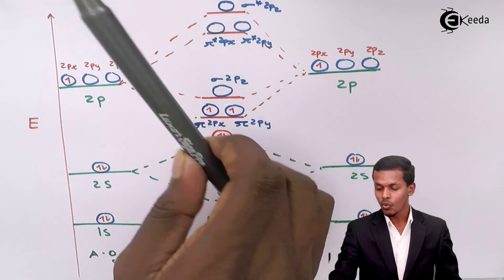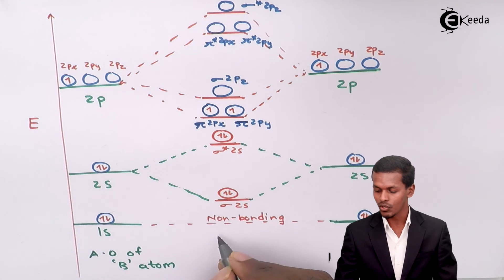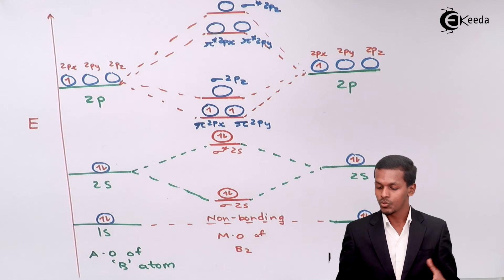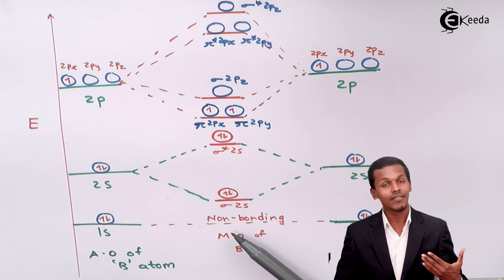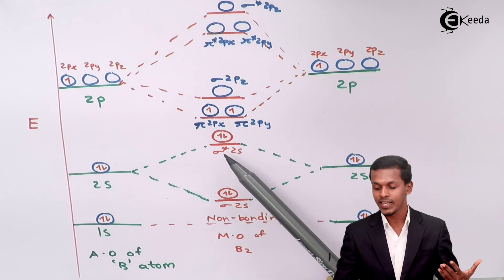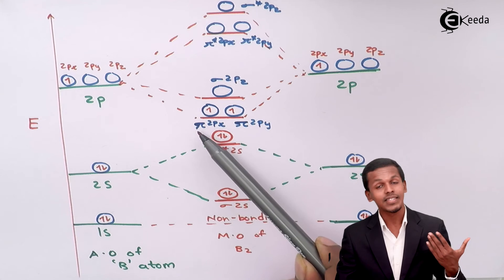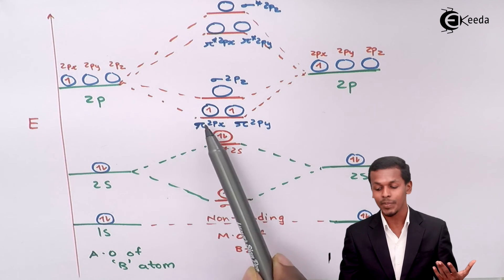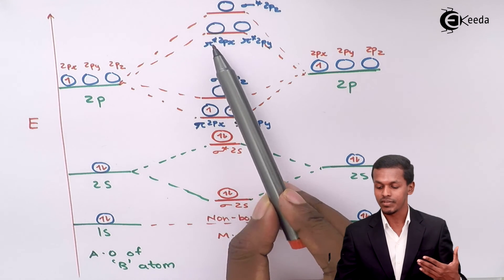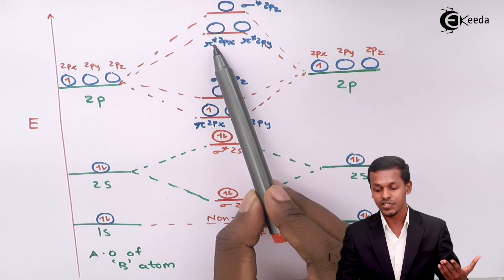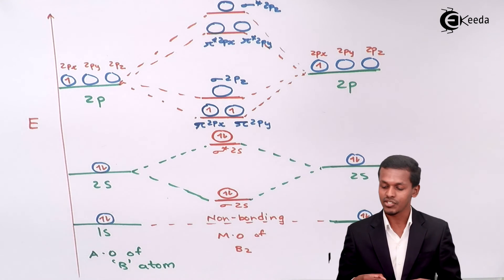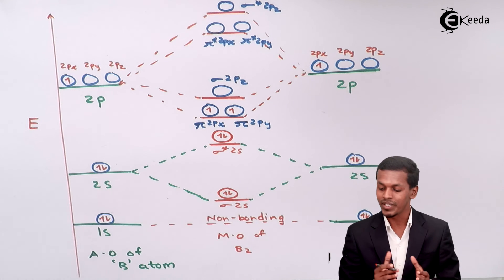The complete energy level ordering for the boron molecule shows: 1s at the lowest energy, then sigma 2s, sigma star 2s, then pi 2px and pi 2py at the same energy level, then sigma 2pz at a higher energy, then pi star 2px and pi star 2py at the same energy level, and finally sigma star 2pz at the highest energy.